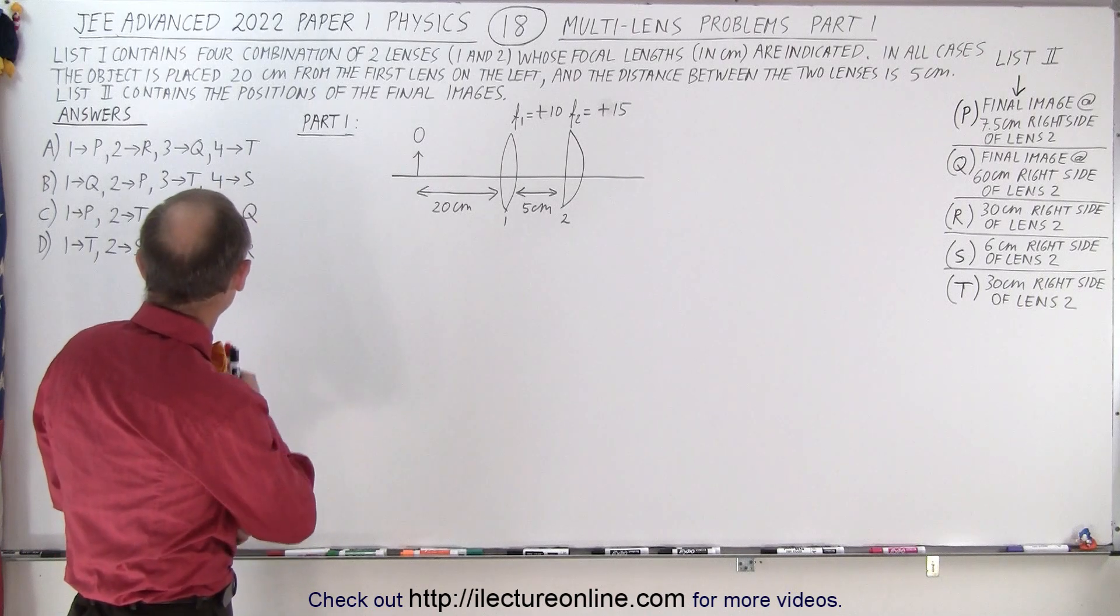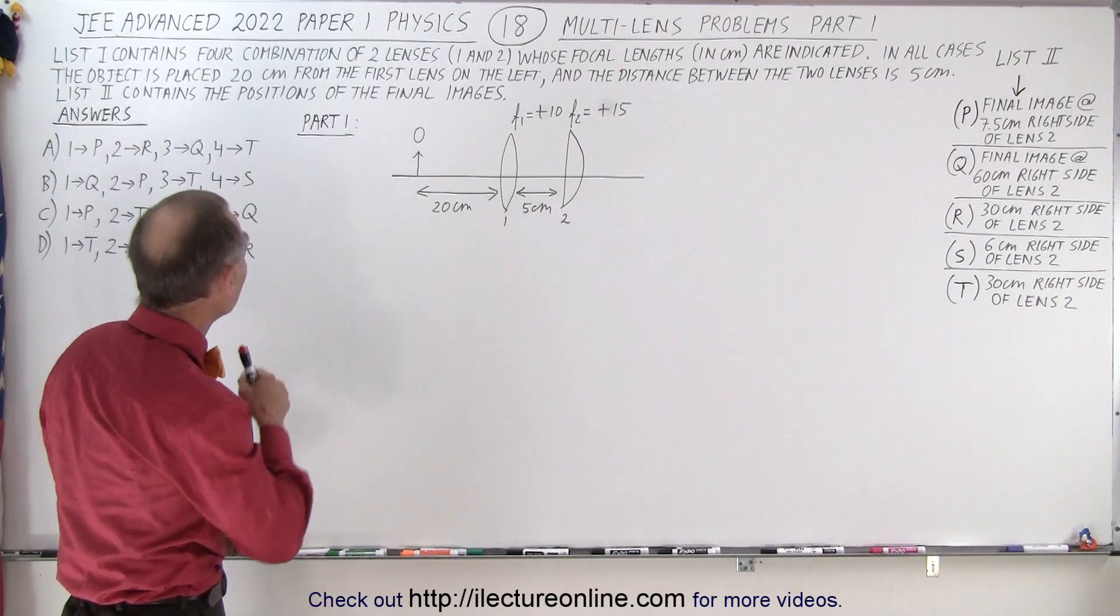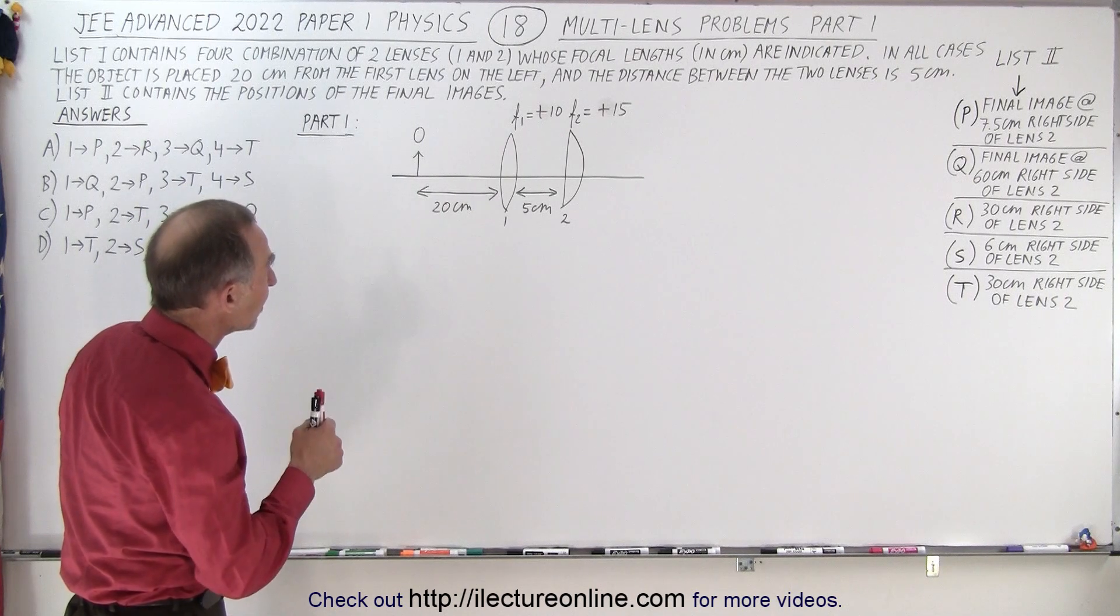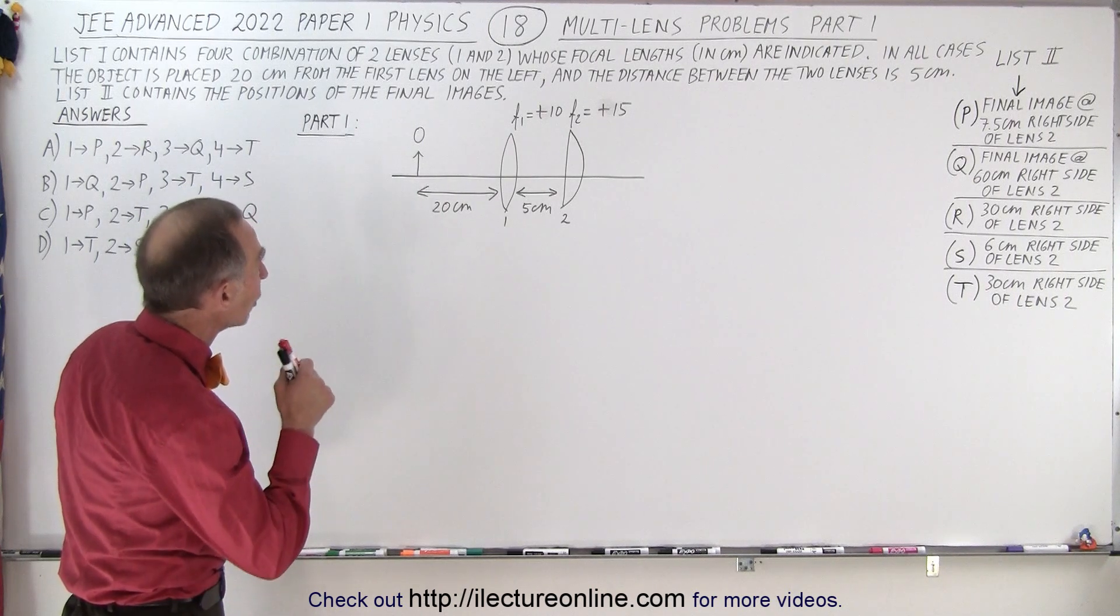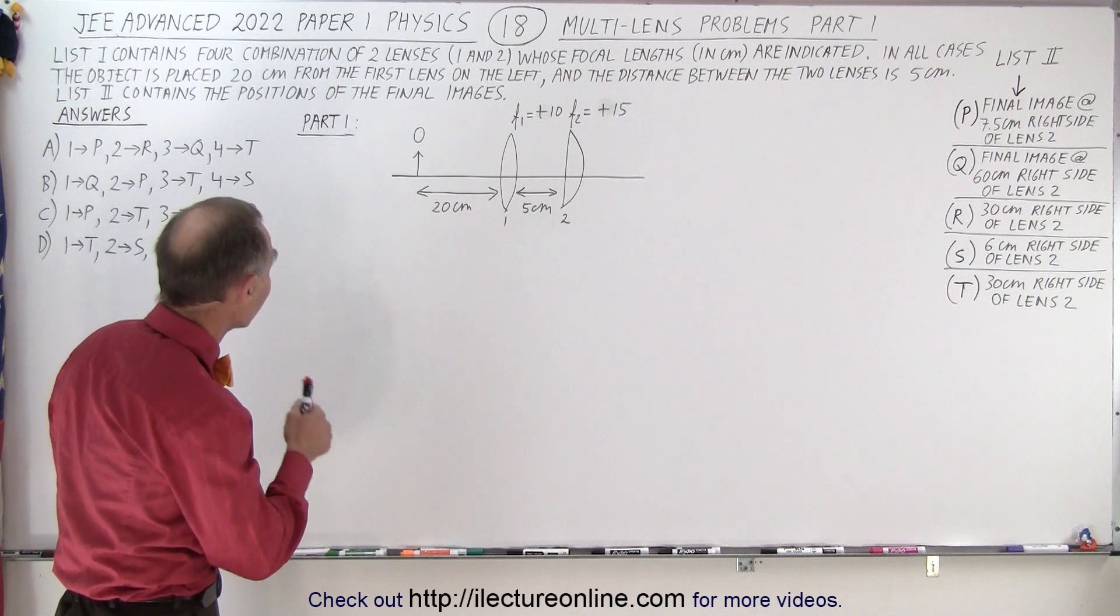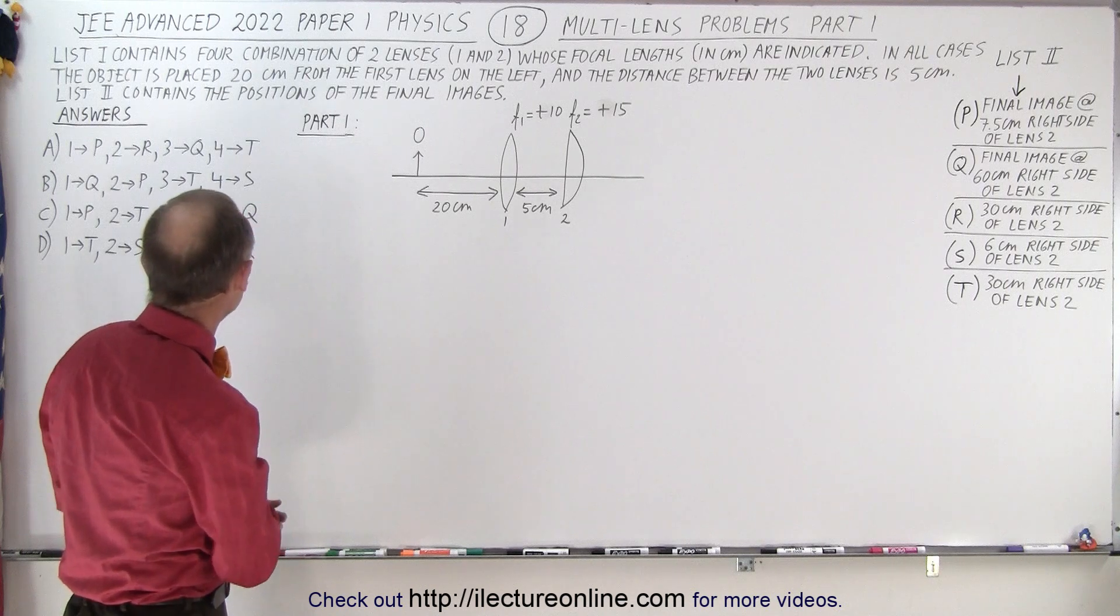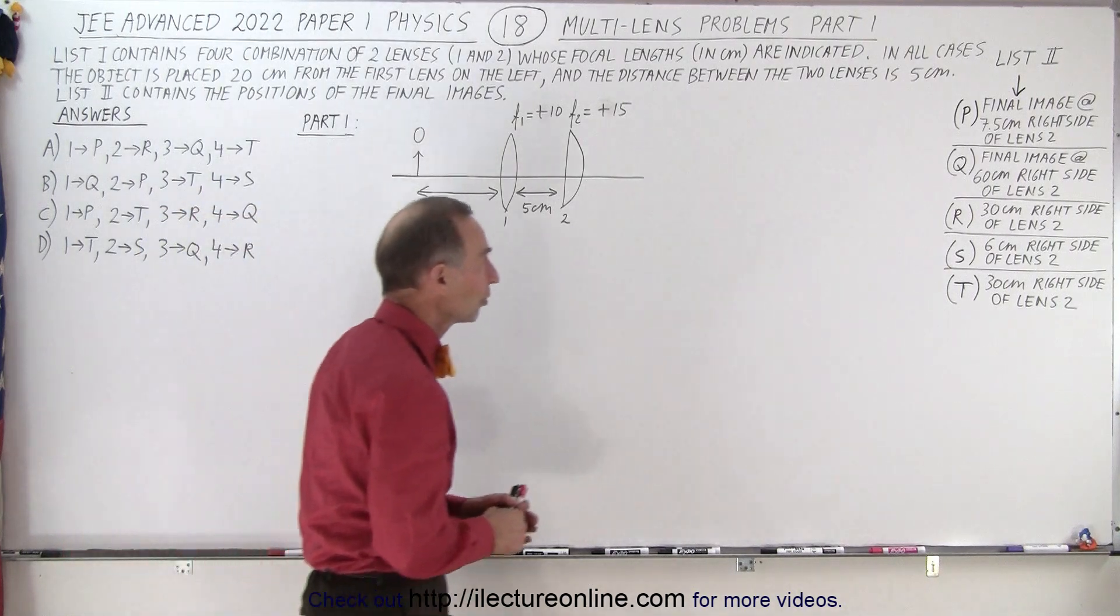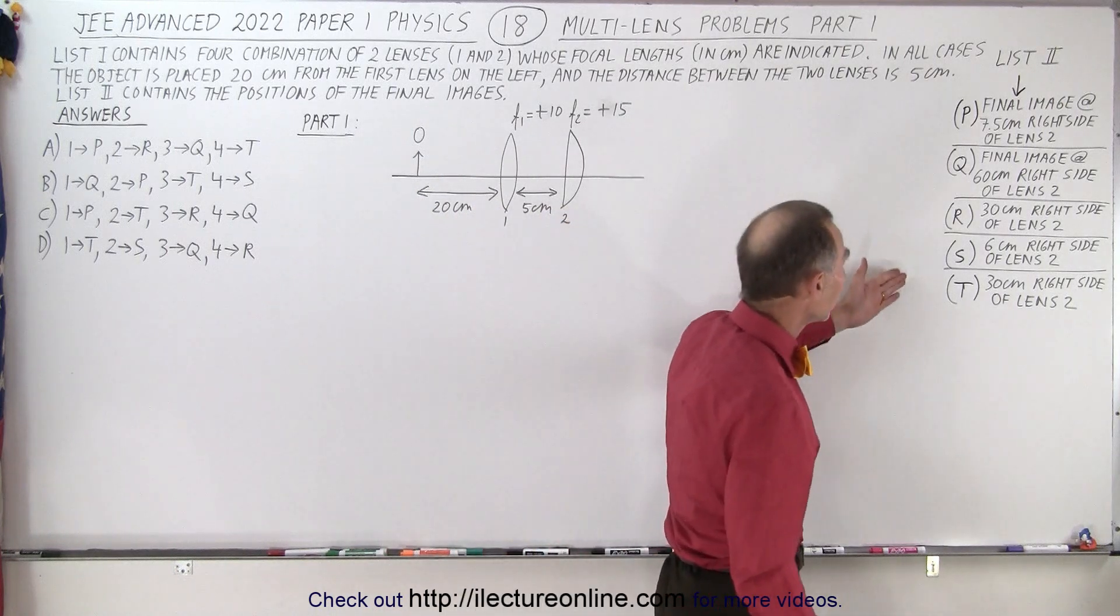Let's read the problem. List one contains four combinations of two lenses, one and two, whose focal lengths in centimeters are indicated. In all cases, the object is placed 20 centimeters from the first lens on the left, and the distance between the two lenses is five centimeters.